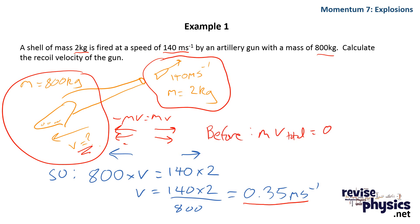we can say that 800 times the velocity of the gun is going to be equal to 140 times 2, or the momentum of the shell.